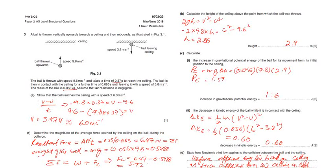Okay. Now, part B. Calculate the height of the ceiling above the point from which the ball was thrown. The second equation of motion: 2gh equals v squared minus u squared. By 2g, again minus 9.8 into h, v squared is 6 squared.